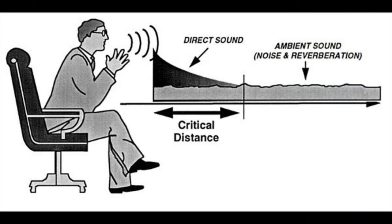The reason that this is so important is because of something we call critical distance. Critical distance is the distance at which the amplitude of a direct sound and the amplitude of noise and reverberation are the same. As long as you stay within the critical distance, the amplitude of a direct speech source will be louder than its reverberation, which means that you will understand speech significantly better. Critical distance is very important, but the thing that will dictate how far or how short that critical distance is are the acoustics of the environment that you're in.